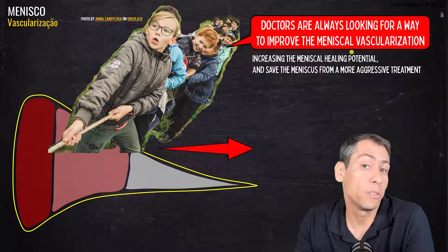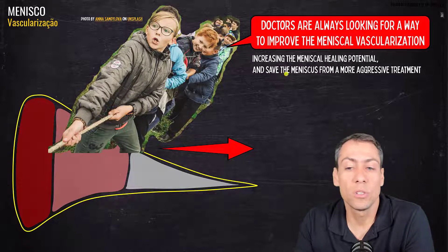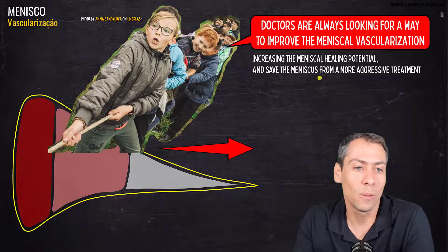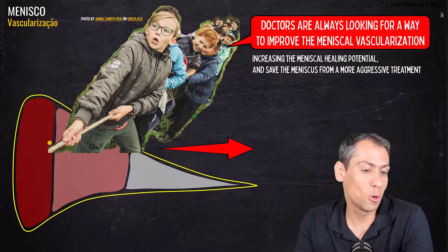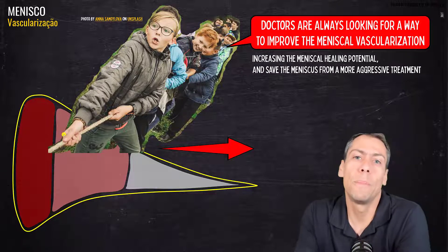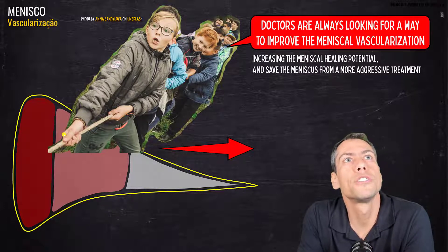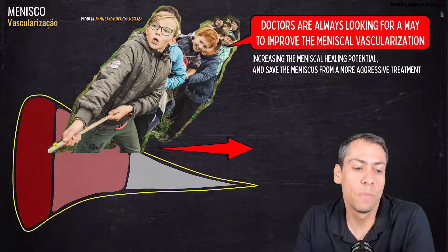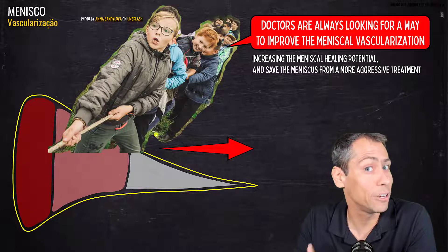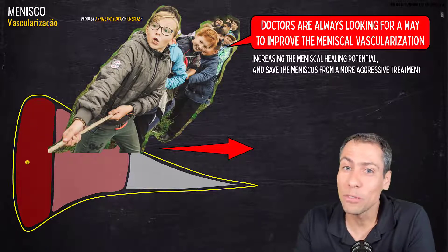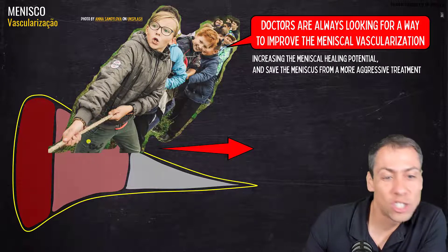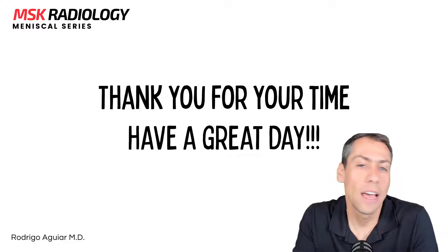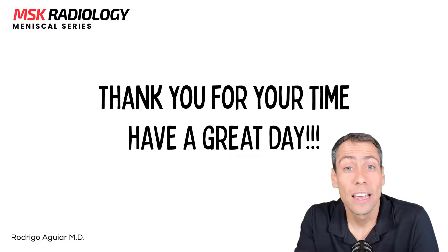Doctors are always looking for ways to improve meniscal vascularization and increase the meniscal healing potential — to save the meniscus from more aggressive treatment. We are always trying to bring vascularization from the periphery toward the central portion of the meniscus. That's it for this video. Thank you for your attention, have a great day, and until next time.